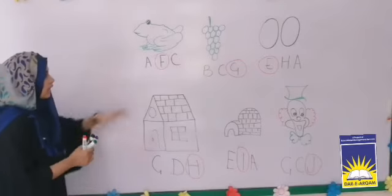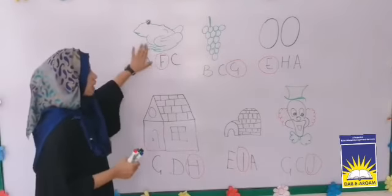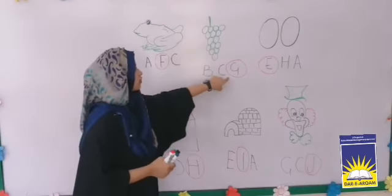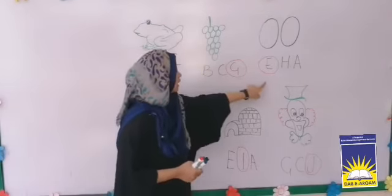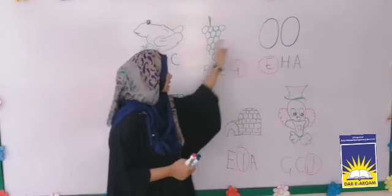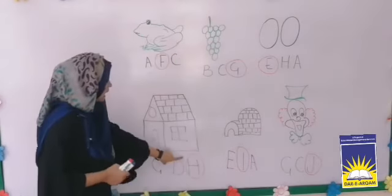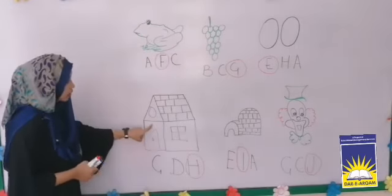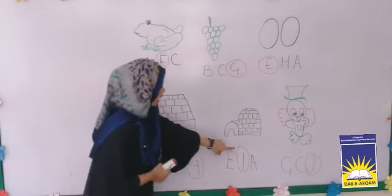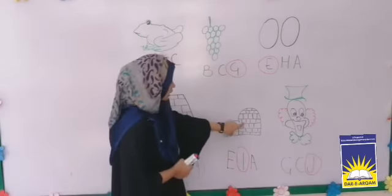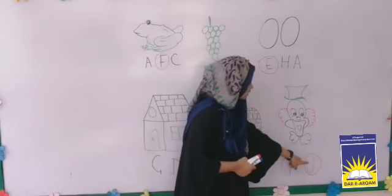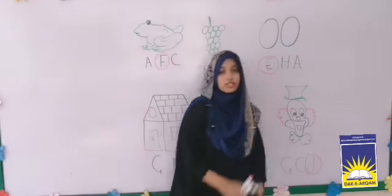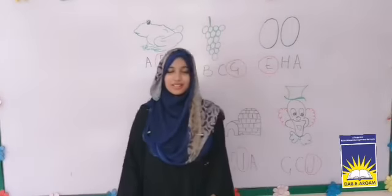Okay, let's review: F for frog, G for grapes, E for eggs, H for house, I for igloo, and at the last, J for joker.